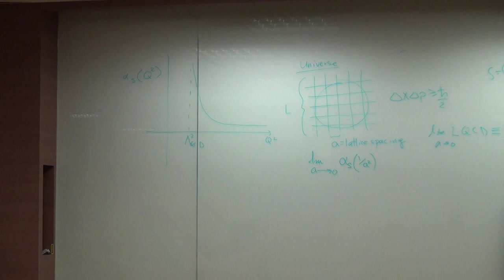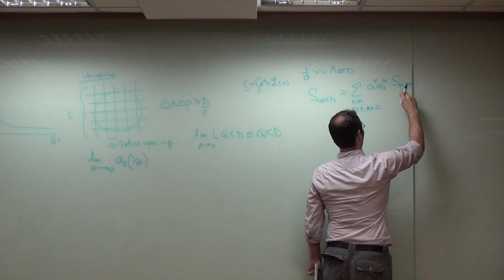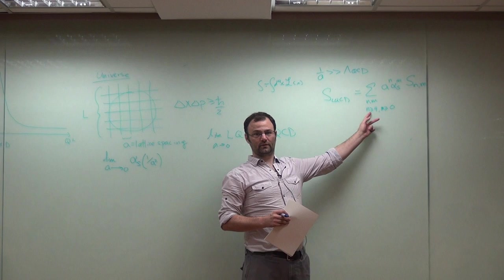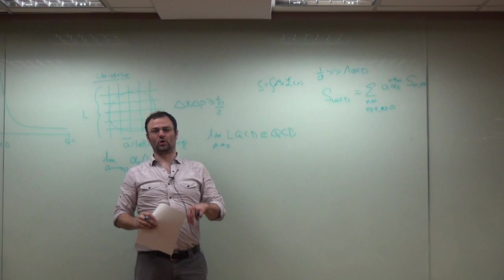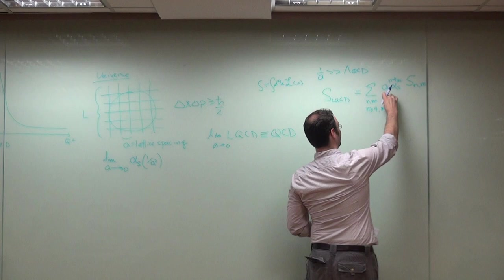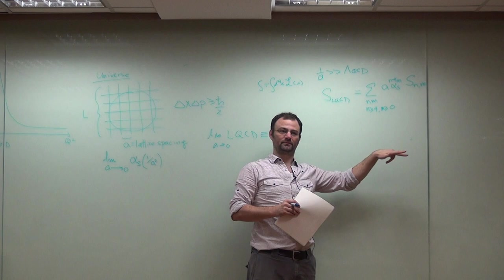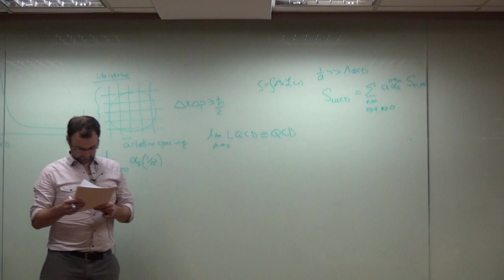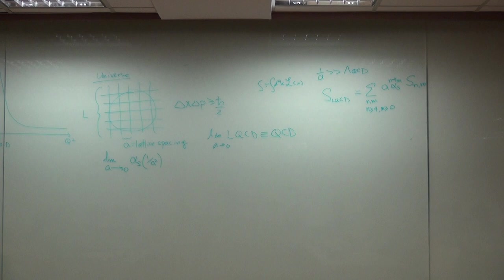Here this is the action, the integral over the Lagrangian density. You know the action can be expanded in a series sum over N, M, N greater than or equal to four, M greater than or equal to zero, A to the N alpha strong to the M, sum S_NM, where N counts the dimension of the operators that are included. So N equals four, we have standard QCD. I think what I really want is N minus four here. That makes more sense. So the first term of the expansion is exactly QCD, and then every other term vanishes with some higher power of the lattice spacing. So basically we can do a Taylor expansion about the continuum limit.